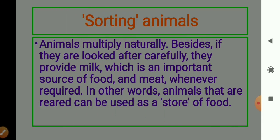The next topic is storing animals. Animals multiply naturally. Besides, if they are looked after carefully, they provide milk, which is an important source of food, and meat whenever required. In other words, animals that are reared can be used as a store of food.